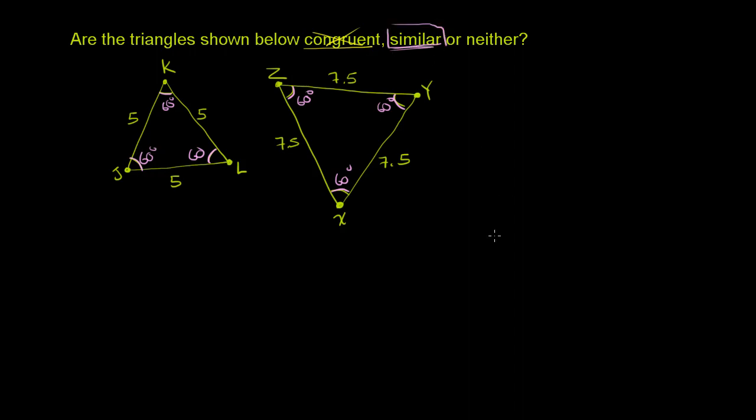Another way to think about it is that the ratio of corresponding sides is the same. So if we say that this side JK corresponds to side ZY, and here we can kind of take our pick because all of the sides have the same length. We say the ratio between these two sides, so JK over ZY is equal to 5 over 7.5.